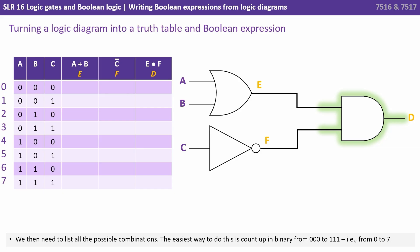We then need to list all the possible combinations for our three inputs and the easiest way is to count from 0 to 7 in binary. So that's from 000 to 111 and those are the rows filled in there.